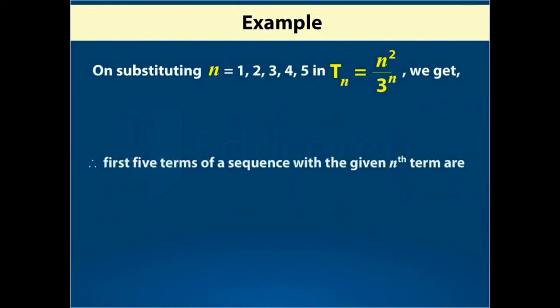Therefore, first 5 terms of a sequence with the given nth term are 1 over 3, 4 over 9, 9 over 27, 16 over 81 and 25 over 243.